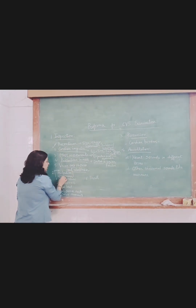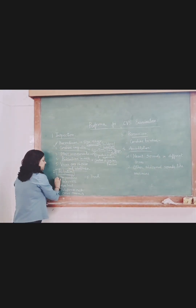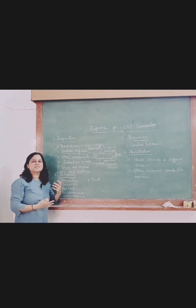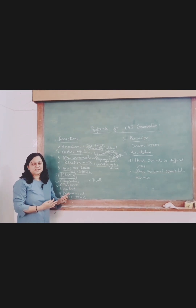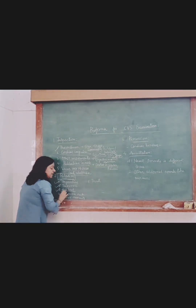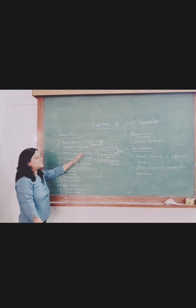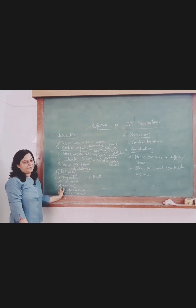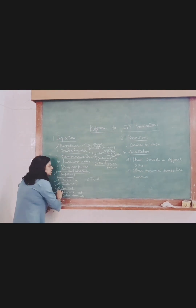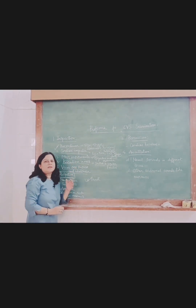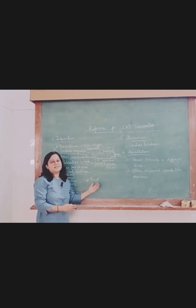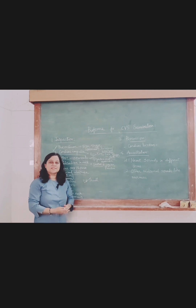Second step is palpation. In palpation you start with temperature — assess the temperature. Then tenderness — assess whether tenderness is present or not; if present, locate it and write down the finding. Then confirm all the inspectory findings while noting points for apex beat, presence of pulsation in the neck, other movements, and thrill. Thrill is usually absent, but if present in a cardiac patient, note it accordingly.